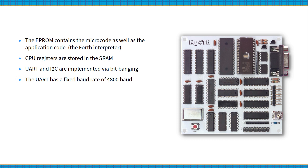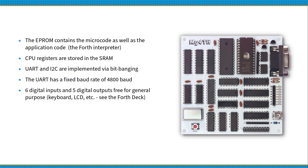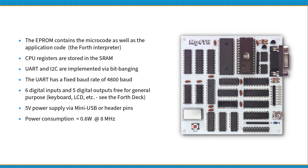The UART has a fixed baud rate of 4800 baud. The GPIO connector provides 6 digital inputs and 5 digital outputs for general purpose use. For example, the keyboard and display of the ForthDeck are connected to this interface. The board can be powered via a mini-USB socket or via header pins. The power consumption is less than 0.6 watts. The board is populated with through-hole components only, no SMDs.